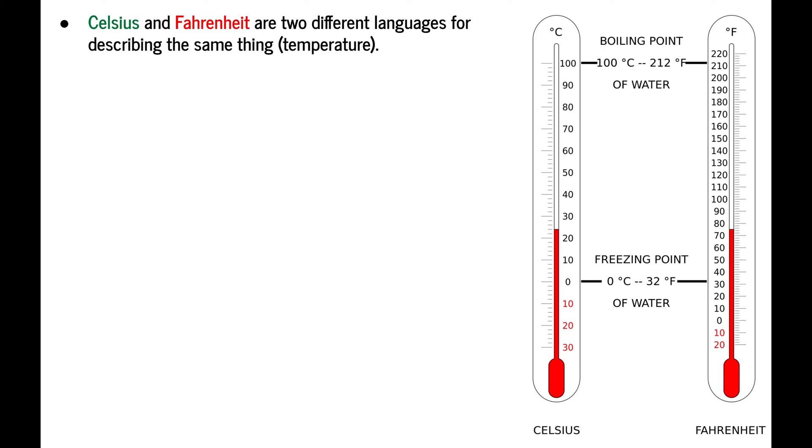Celsius and Fahrenheit are like two different languages that describe the same thing, which is temperature. Over on the right we can see two thermometers, which are actually at the same level, so they're describing the same temperature. The only difference is where we slap the numbers on the actual thermometer itself. One key difference between the two is that Celsius has larger degrees than Fahrenheit. To be specific, 1 degree Celsius is equal to 9 fifths of a degree Fahrenheit. That's nearly double. So 1 Celsius is almost like 2 Fahrenheit.